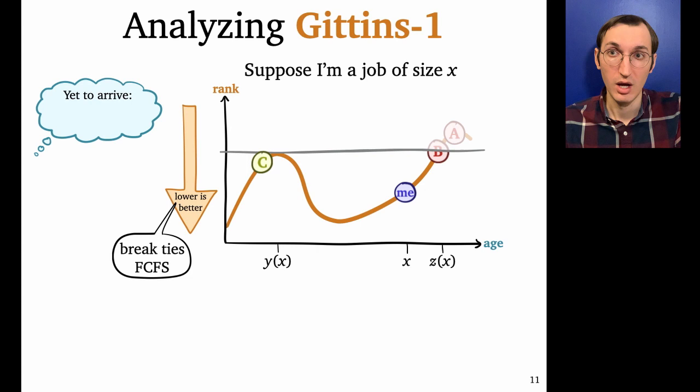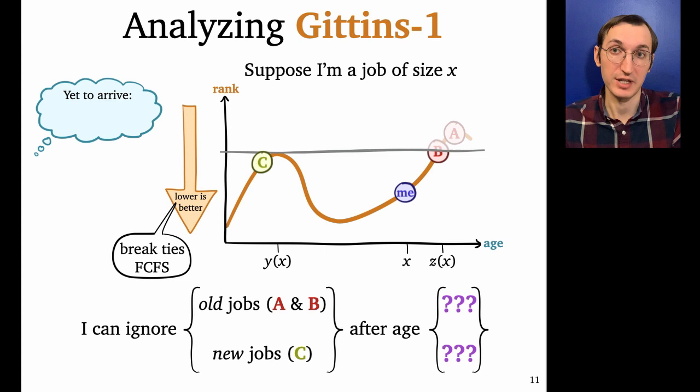Okay, so what are the key factors that determined which jobs bothered me and how much? The way I like to think about it is at a certain point for every job, I can ignore it. So I can ignore jobs A and B after a certain age, I can ignore job C after a certain age, it turns out that the most important thing is whether a job is old, that was in the system when I arrived, or is new, namely arrived after me.